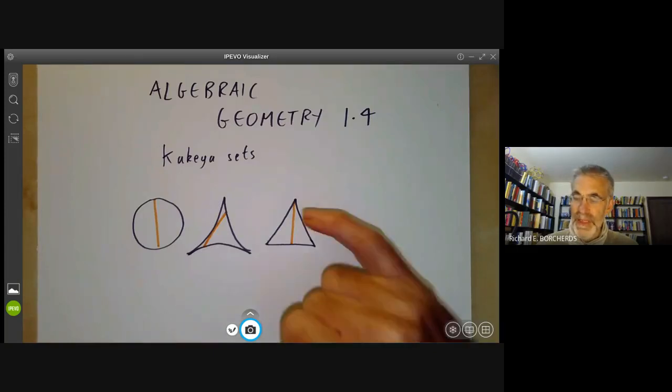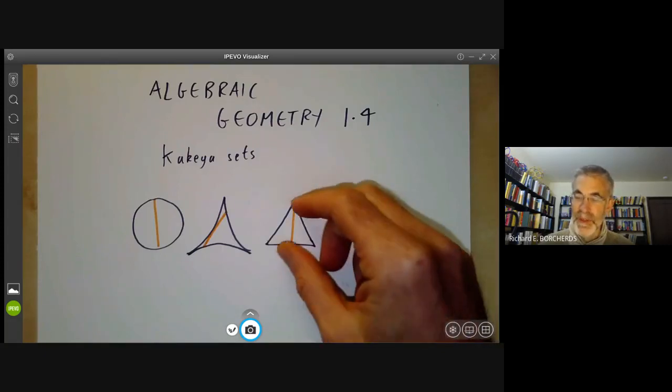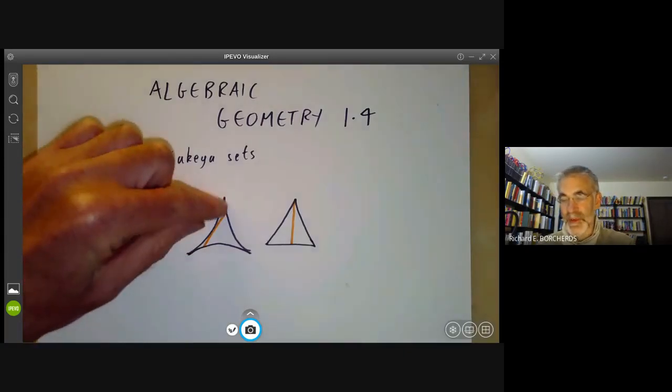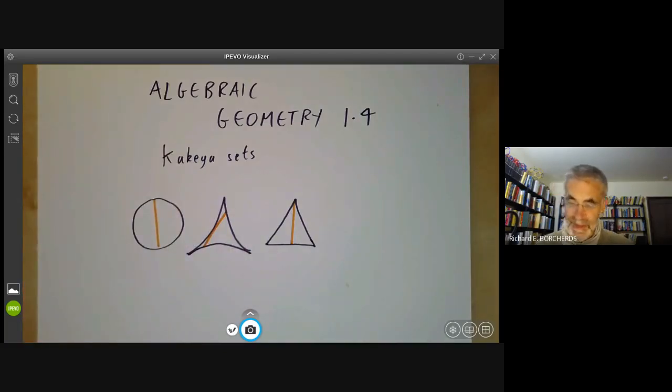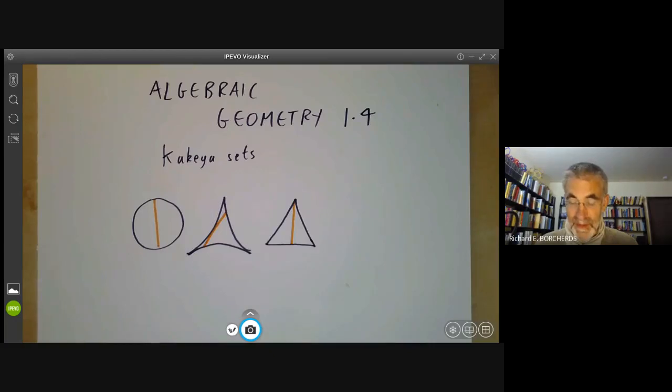You can do a little bit better by taking a triangle of height one, and then if you think about it very quickly, you can see you can turn this line around inside the triangle. Kakiya suggested that the minimum possible set was this sort of shape. However, Besikovic showed that in fact there was no lower limit to the size of a set in which you could turn around a unit interval. However small a number is, you can find a set of area smaller than that in which you can turn around a unit interval.